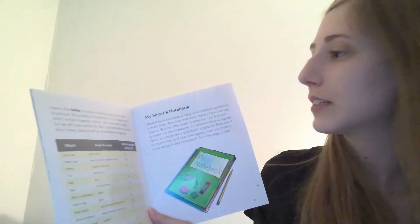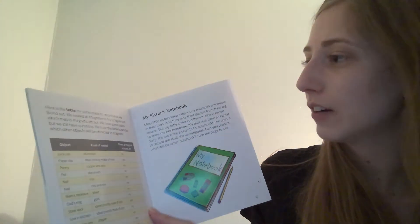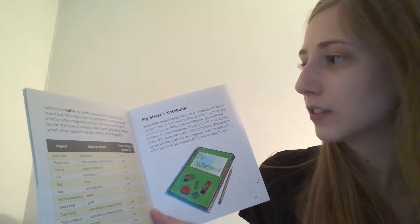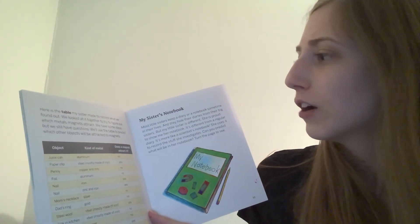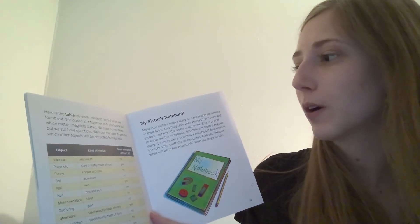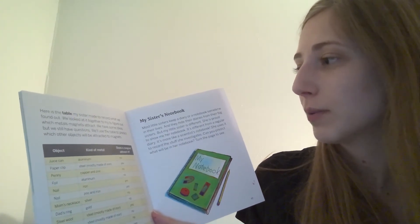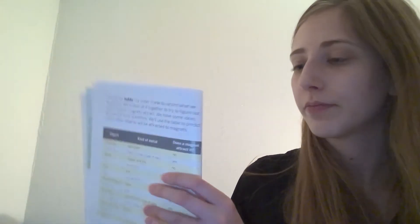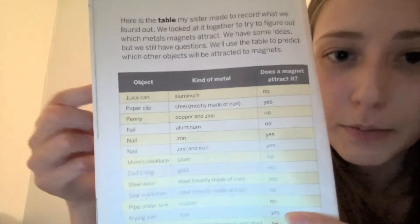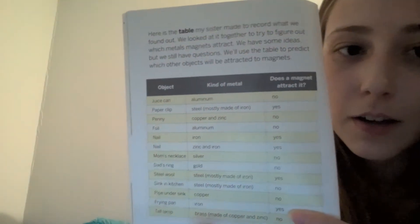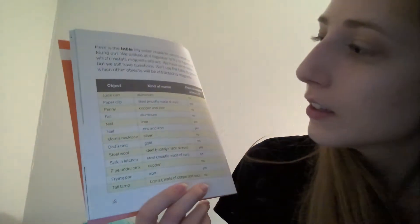Here's a table my sister made to record what she found out. We looked at it together to try to figure out which metals magnets attract. We have some ideas, but we still have questions. We'll use the table to predict which other objects will be attracted to magnets. There's the object, the kind of item, and does a magnet attract?